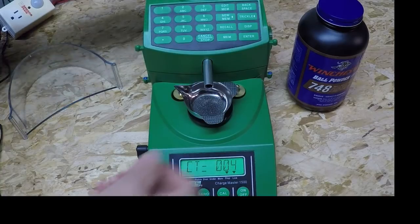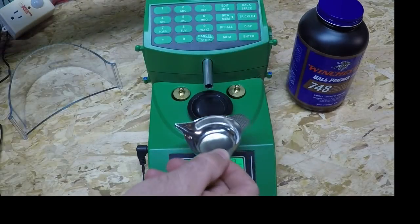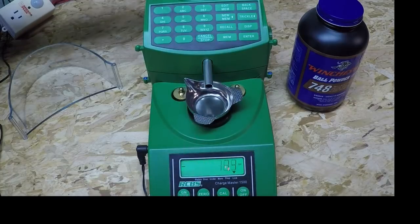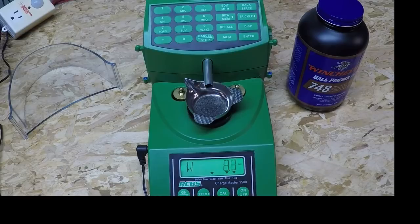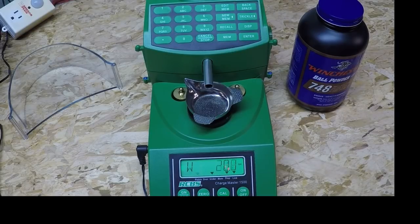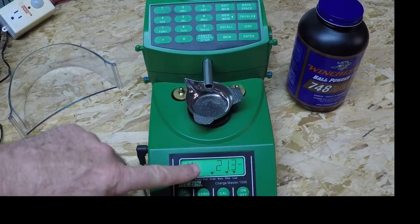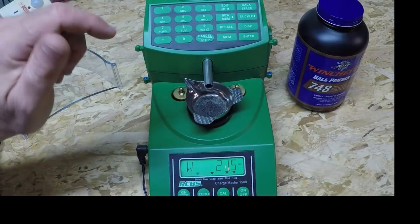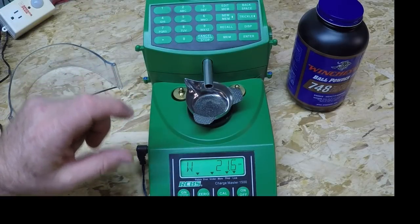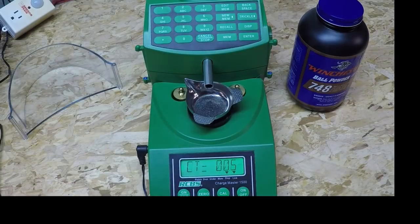Back to what I was saying, when it's in the fast dispense period, I believe that it's measuring how much powder flows through the nozzle, amount of weight per unit time. And that dramatically affects how long it takes in the trickle mode.